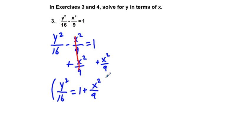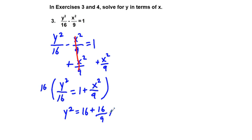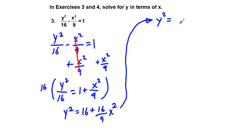Multiplying the entire equation by 16, the 16 cancels on the left, giving us y² equals 16 plus 16/9 x². We then factor out 16/9 from the right side: 16/9 times 9 equals 16, and 16/9 times x² equals x², so y² equals 16/9 times the quantity (9 plus x²).